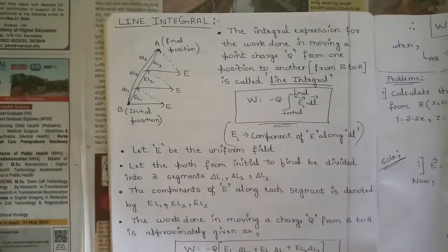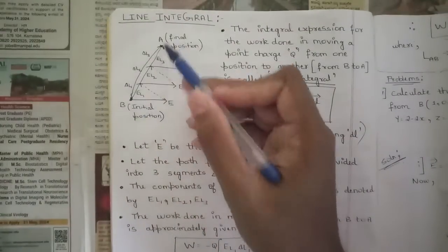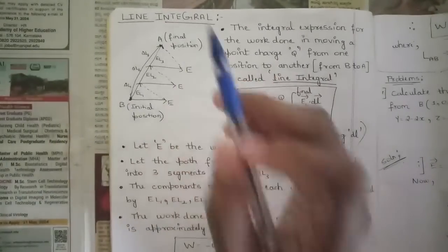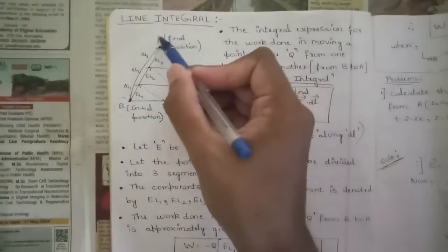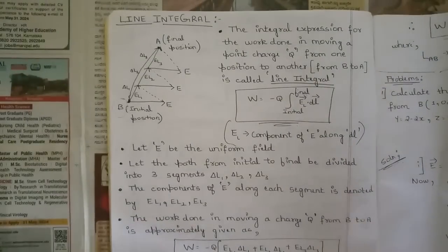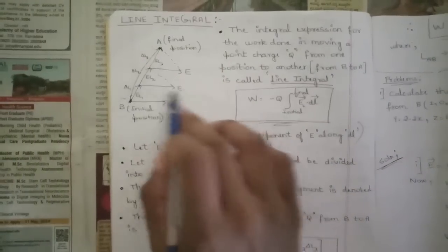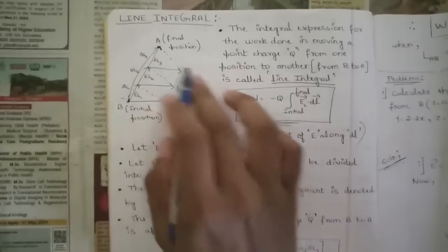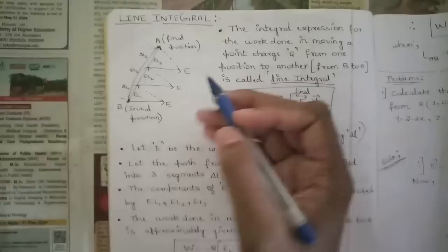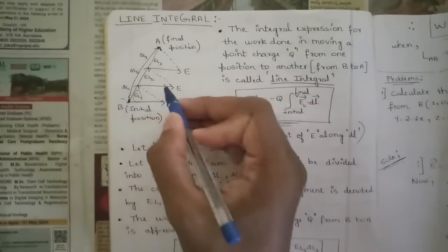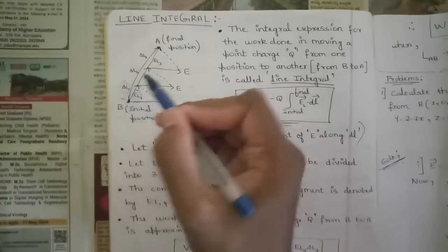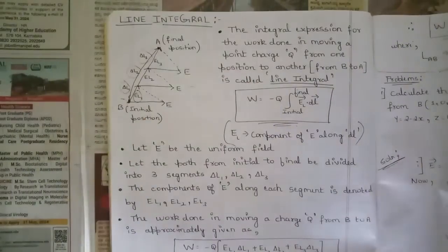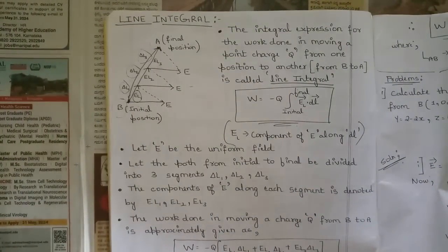First, let's consider a straight line which has an initial position and a final position. I've named the initial position as point B and the final position as point A. Along that we have drawn three panels of parallel lines representing the electric field, named E_L1, E_L2, and E_L3, and we have also named a few components: Delta 1, Delta 2, and Delta 3.